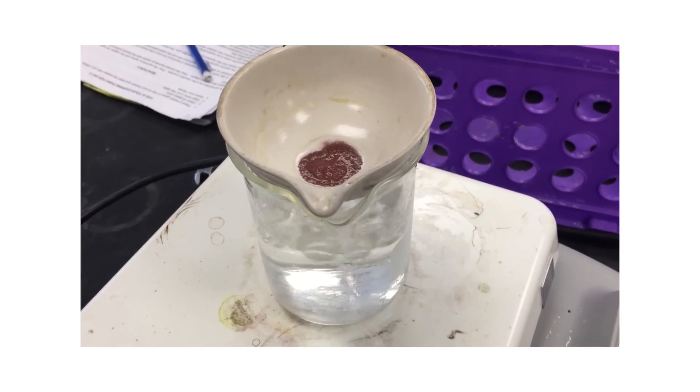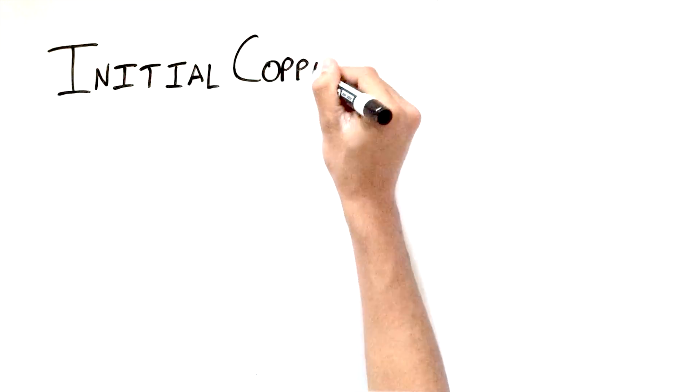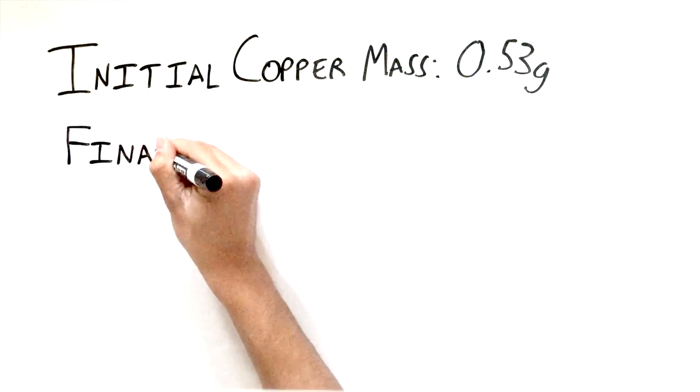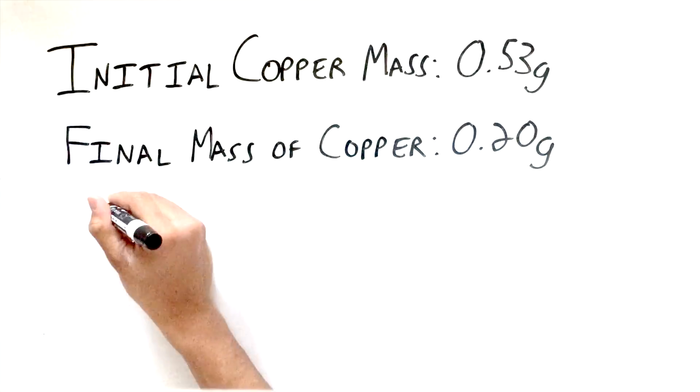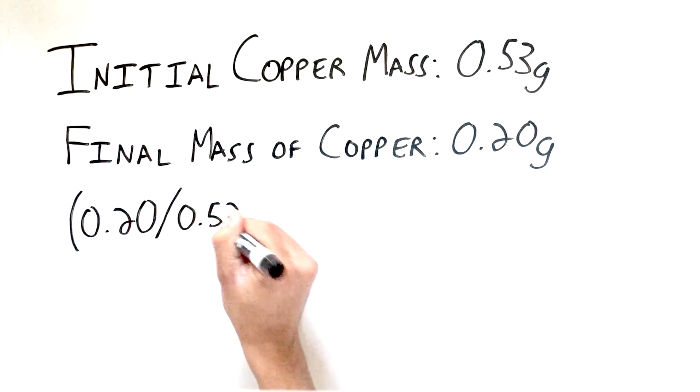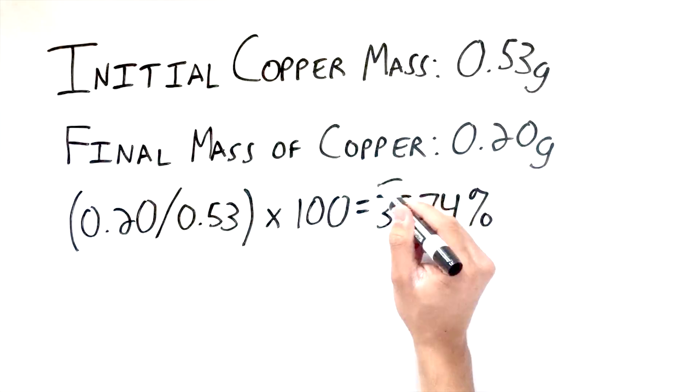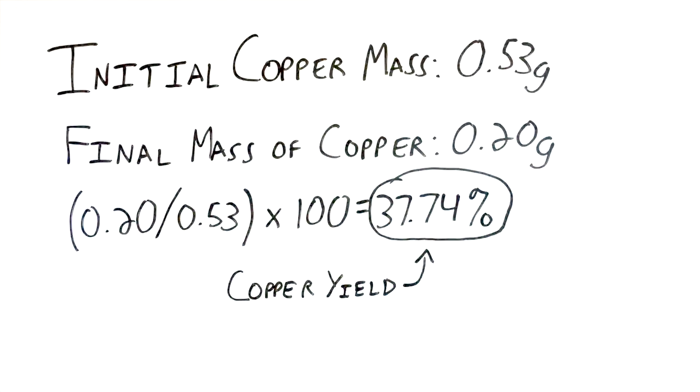Let's check out our results. Our copper sample had an initial mass of 0.53 grams. By the end, we only had 0.2 grams remaining. What happened? Well, when we did the math, we found that we had a 37.74% copper yield.